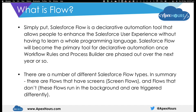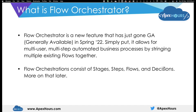So that's Flow. Now let's talk about Flow Orchestrator. Flow Orchestrator is a new feature that's just gone GA, or generally available, in Spring 22 with the latest release. Simply put, it allows for multi-user, multi-step automated business processes by stringing multiple existing flows together.